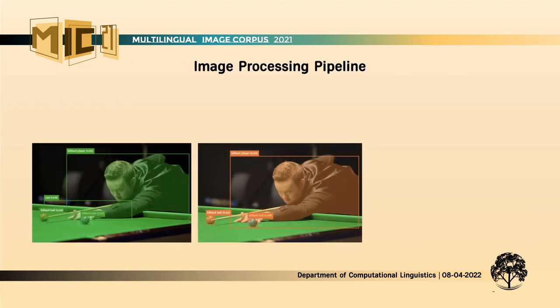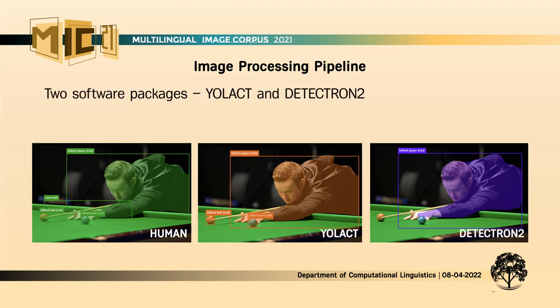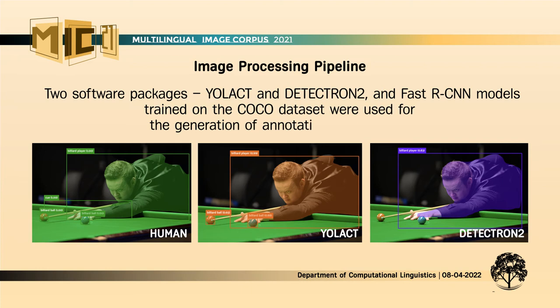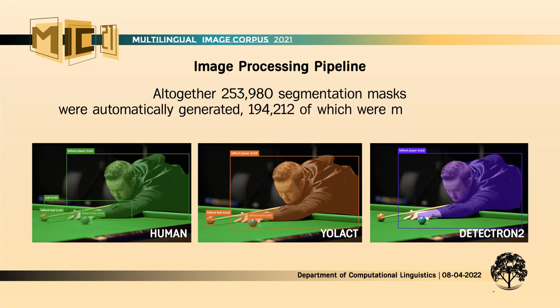To accelerate manual annotation, an image processing pipeline for object detection and segmentation was developed. Two software packages — YOLACT and Detectron2 — and Faster R-CNN models trained on the COCO dataset were used for the generation of annotation suggestions. The performance of the selected models was evaluated over all domain-specific datasets. Within the domain of sport, the results demonstrate similar behavior with a slight predominance of one model, which was further used to predict object classes in datasets from the other three thematic domains. Altogether, 253,980 segmentation masks were automatically generated.